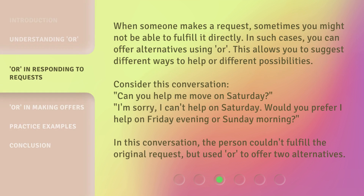When someone makes a request, sometimes you might not be able to fulfill it directly. In such cases, you can offer alternatives using 'or'. This allows you to suggest different ways to help or different possibilities. Consider this conversation. In this conversation, the person couldn't fulfill the original request, but used 'or' to offer two alternatives.